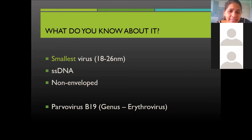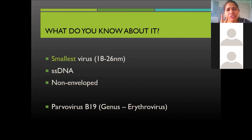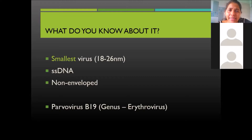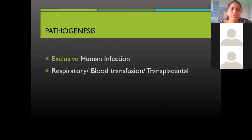Parvovirus B19 belongs to the genus Erythrovirus. There are three total genera — one is Dependovirus, which is associated with Adenovirus, and the other is Erythrovirus, which contains Parvovirus B19. This is the most significant in human infections, causing exclusive human infection.